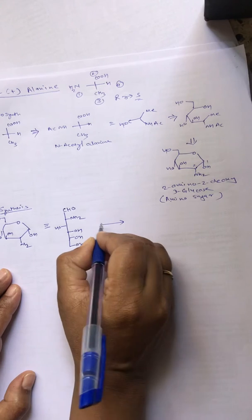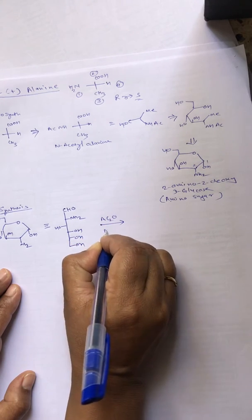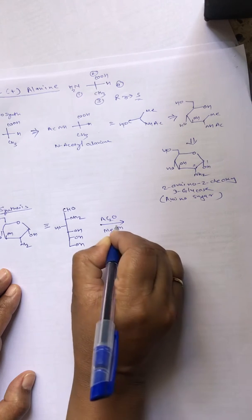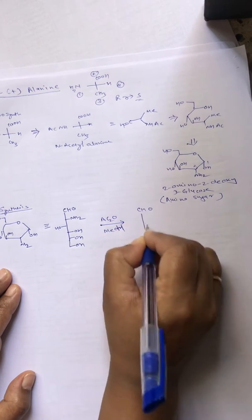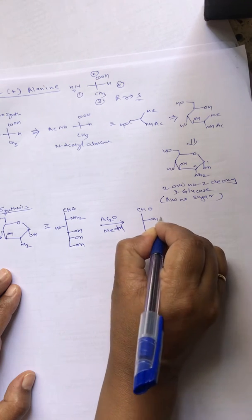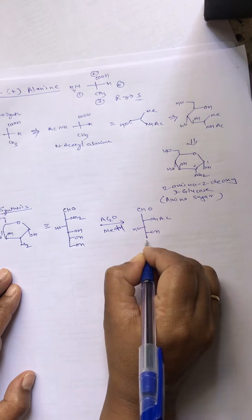This amino sugar on treatment with acetic anhydride in presence of methanol will protect the amino group, giving NH-AC, OH, OH, OH, and OH.